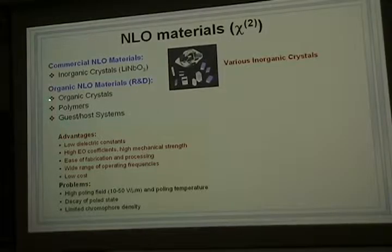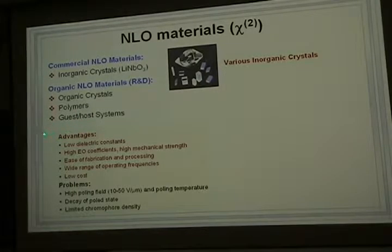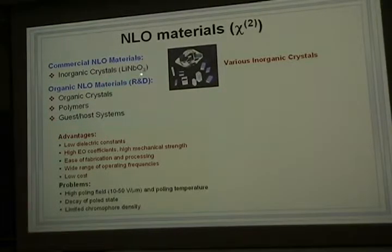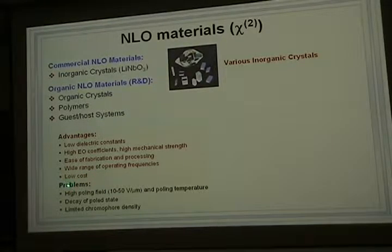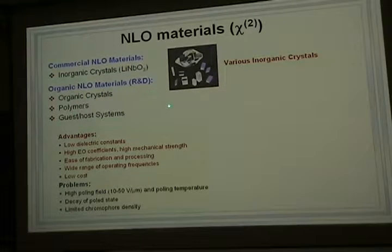Organic nonlinear optical materials include organic crystals, polymers, and guest-host systems. They have lots of advantages over inorganic crystals, but also suffer from some problems. For example, organic nonlinear optical materials are mainly used at the stage of research and development.